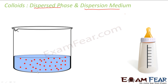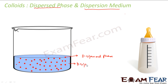The particles of the colloids are called the dispersed phase. For example, if I have water and in it I have some small red colloidal particles, those red particles are my dispersed phase. The whole medium — for example water — is called the dispersion medium.